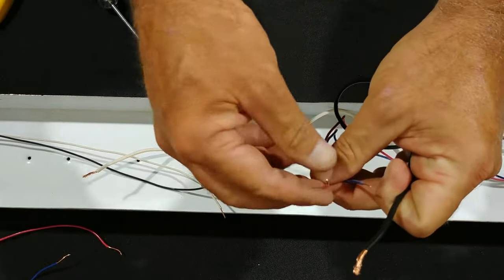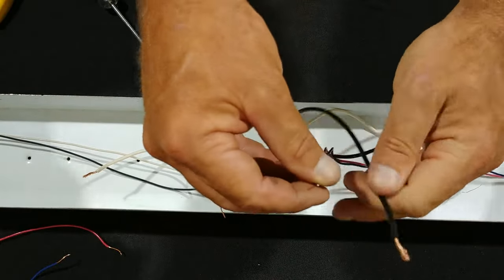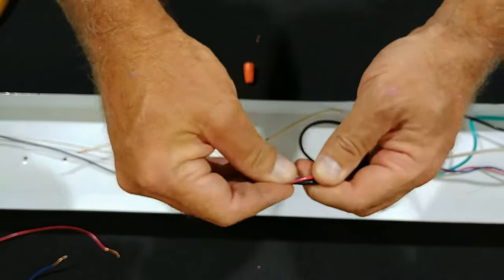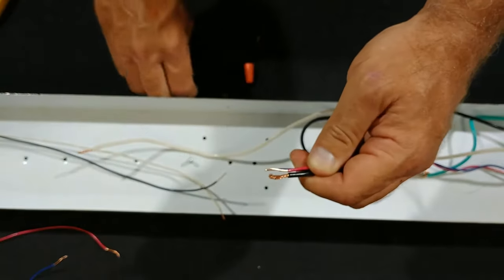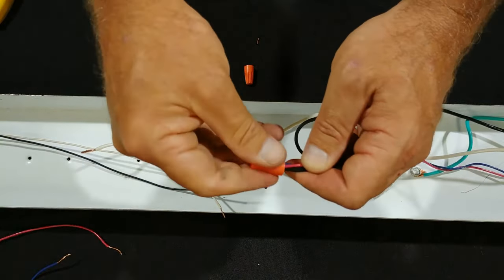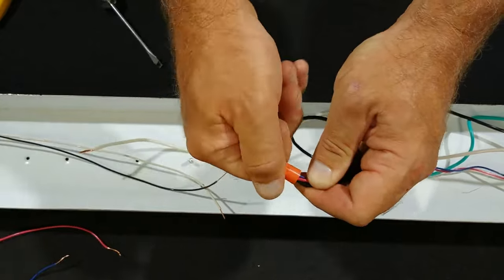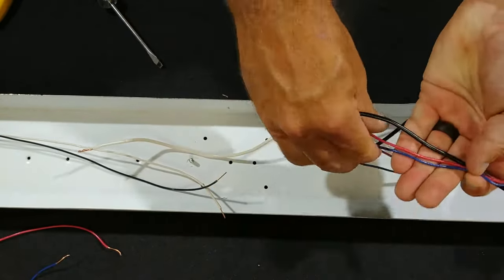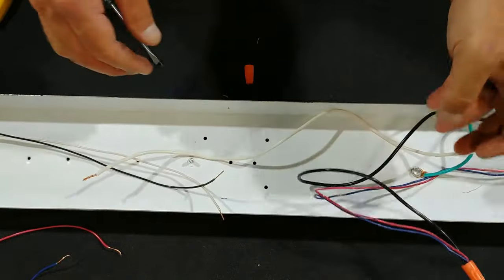Remember, we are bringing the red and blue together. So we'll go ahead and match that with our black coming in on our power line. Just wire nut these together securely and tightly and then we'll bend it up out of the way.